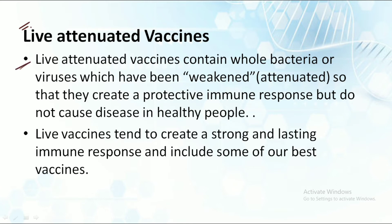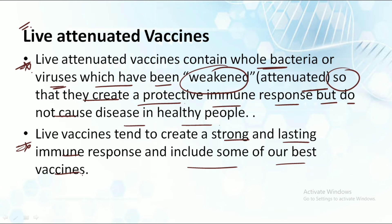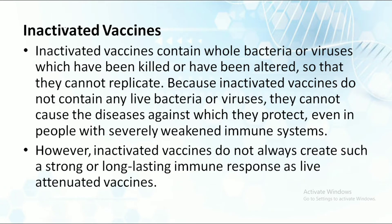The second type is the live attenuated vaccine. Live attenuated vaccines contain the whole bacteria or virus which have been weakened — that is, attenuated — so that they create a protective immune response but do not cause disease in healthy people. Live vaccines tend to create a strong and lasting response. The causative agent is weakened so it does not cause disease in our body but still creates a protective immune response, making this type mostly preferred.